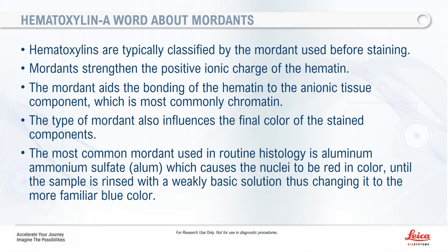Hematoxylins are classed by whichever mordant they're using. The mordant strengthens the positive ionic charge of the hematin, aiding in the bonding of hematin to the anionic tissue components — your chromatin, DNA, and RNA. Because we're using different mordants, that influences the final color of the stain components, though those changes are very subtle across the board.